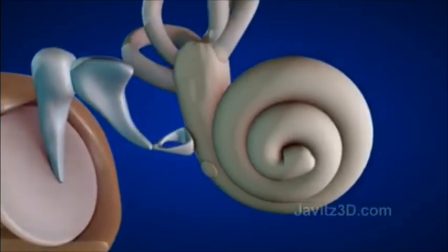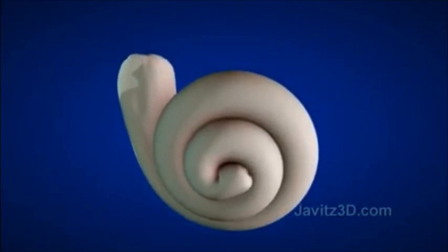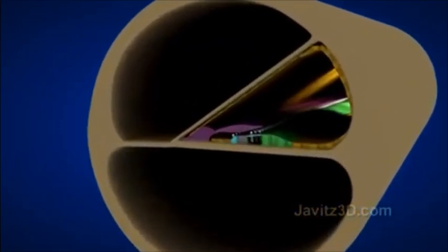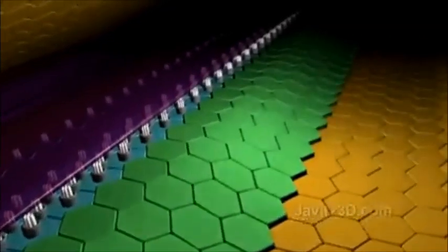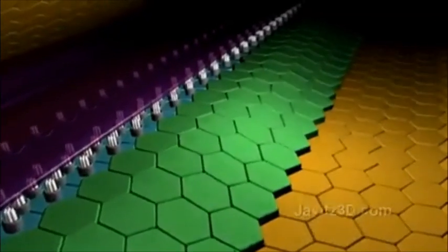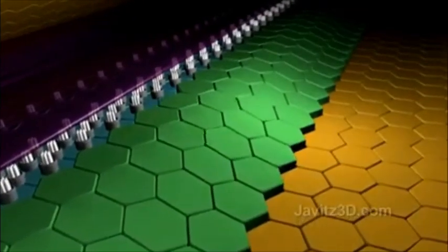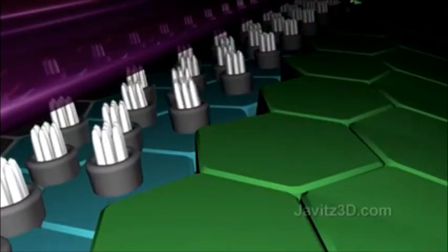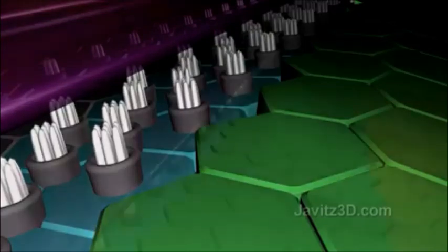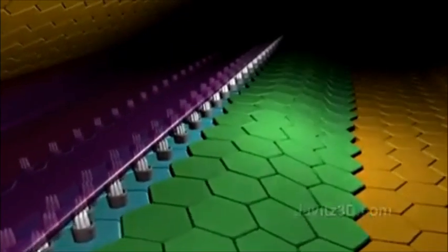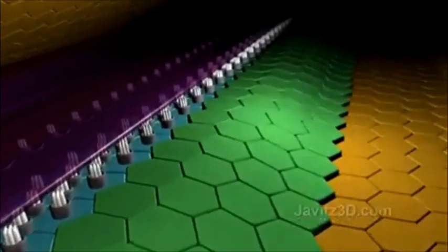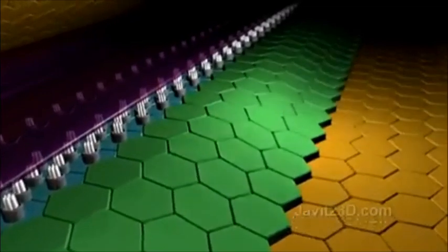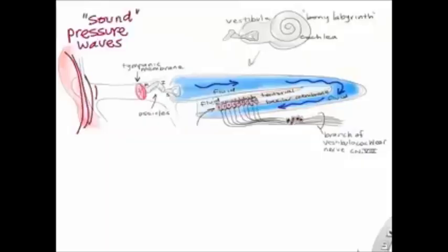Inside the cochlea — which is coiled but easier to understand straightened — there are three chambers. Along the inside wall are 20,000 to 30,000 reed-like fibers. As fluid waves travel along, they encounter fibers with matching resonant frequency and release energy. Adjacent to these fibers is a structure containing hair cells; when the fibers resonate, the hair cells move and send electrical impulses to the cochlear nerve and brain. Louder sounds cause more hair cells to move; different pitches resonate at specific locations.